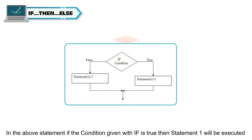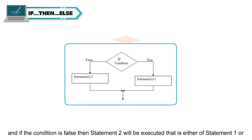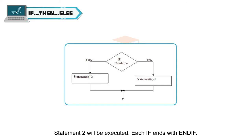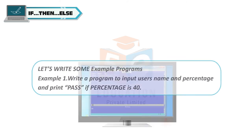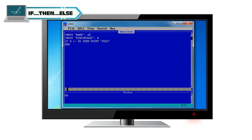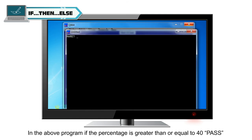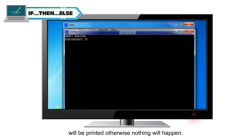In the IF-THEN-ELSE form, if the condition is true then statement 1 is executed; if false then statement 2 is executed — either statement 1 or statement 2 will run. Each IF ends with END IF. Example 1: Write a program to input a user's name and percentage and print "pass" if percentage is 40 or more. Program: INPUT "name:"; a$, INPUT "percentage:"; b, IF b >= 40 THEN PRINT "pass" END IF. If percentage is >= 40, "pass" is printed; otherwise nothing happens.